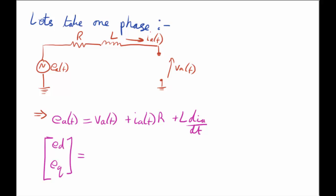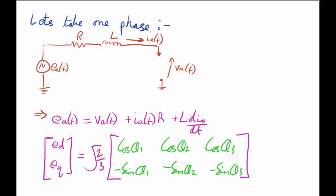And then to write the equation for this circuit, what we can do is we can write the dq transformation matrix here in terms of cos theta 1, 2 and 3 and then minus sine theta 1, 2 and 3, and then multiply this by Ea, Eb and Ec.